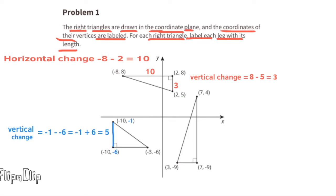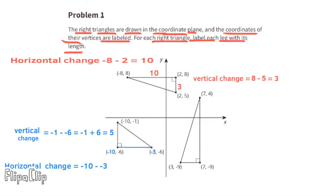Negative 1 minus negative 6 is the same as negative 1 plus 6, which can also be looked at as positive 6 and negative 1, or 6 minus 1. The points on this side length have a horizontal change of negative 7, so its length is 7 units. 10 minus negative 3 is the same as negative 10 plus 3.